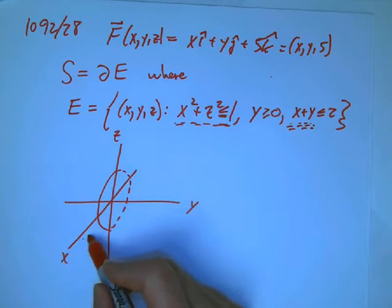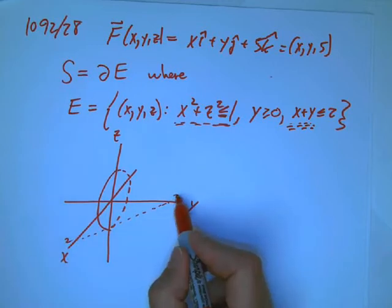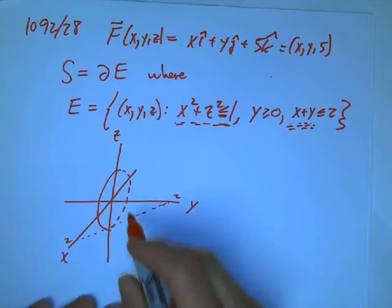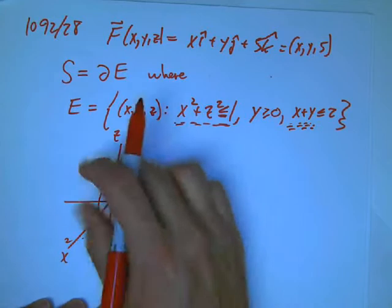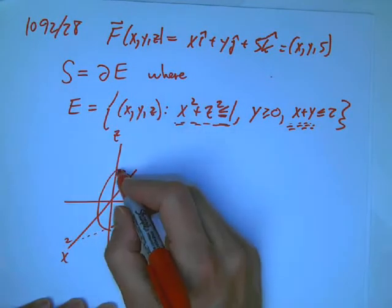So what that's going to do is it's going to take my cylinder, which extends infinitely to the right, and it's going to cut it off in an ellipse, a tilted ellipse.